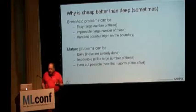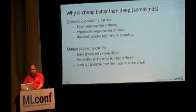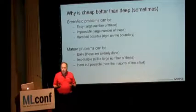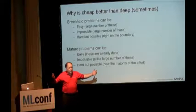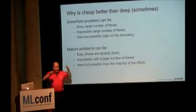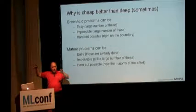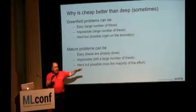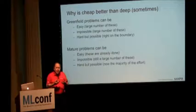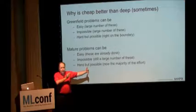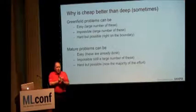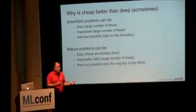Cheap is better than deep in some cases. For instance, if you have greenfield situations — situations where nobody's really worked on this problem yet — most of the problems are easy. There's a borderline set of problems that are hard, which sit between easy and impossible. Those are relatively smaller than the easy parts, and the impossible parts are, of course, impossible. Once the field matures, it means people have done the easy stuff. Unless you're really clever and restate the problem, there are a lot of hard problems to be solved — you see this in real situations.